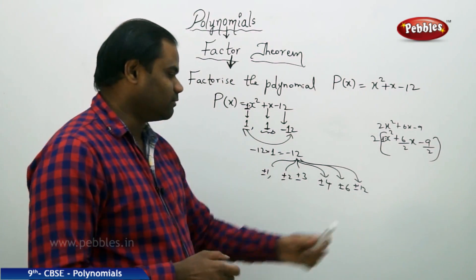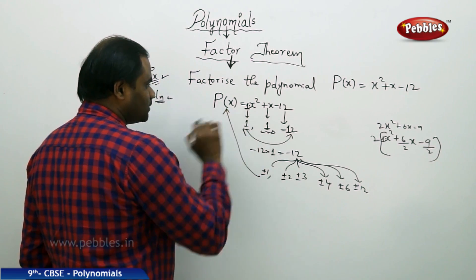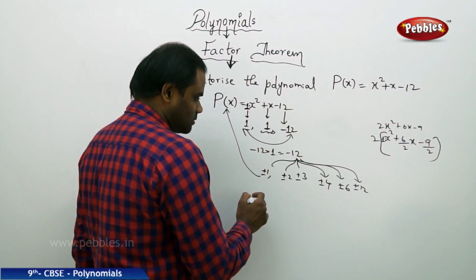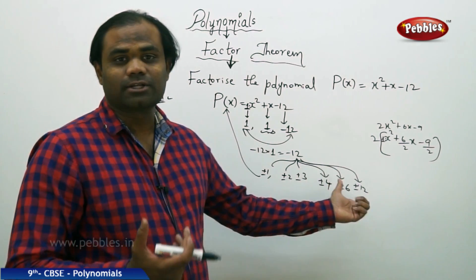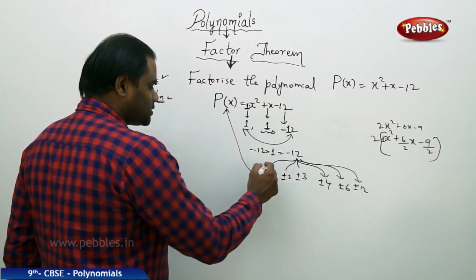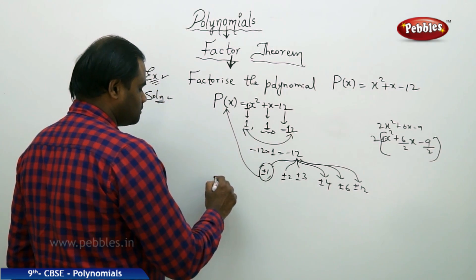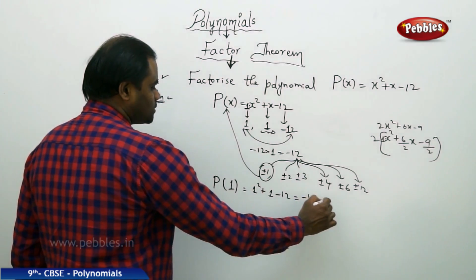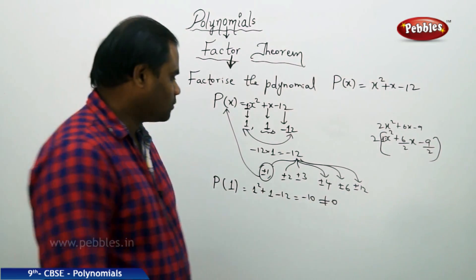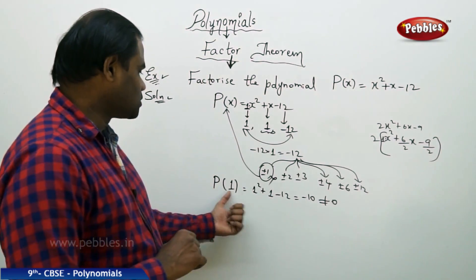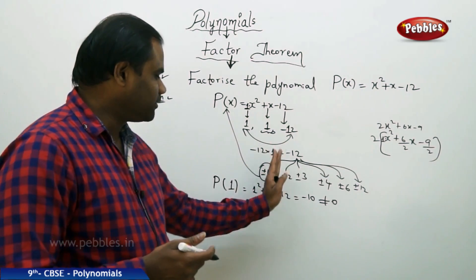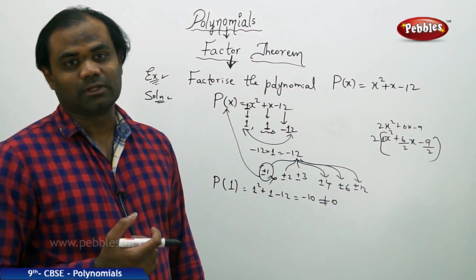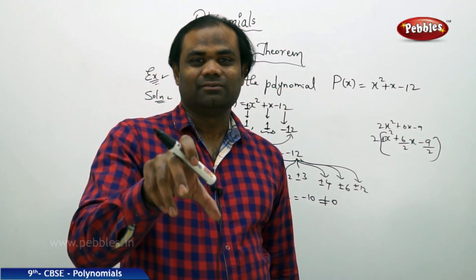Once I identify the possible factors, I randomly substitute each of them into the polynomial until the value becomes 0. Out of these, I identify the zeros. So which values are zeros of the polynomial is what we are identifying here. Let's check: P of 1 gives 1 squared plus 1 minus 2L, which is not equal to 0. Therefore 1 is not a zero of the polynomial. Minus 1 also doesn't work. So we randomly try with 1, minus 1, 2, minus 2, 3, minus 3, 4, minus 4, 6, minus 6, and 2L, minus 2L.